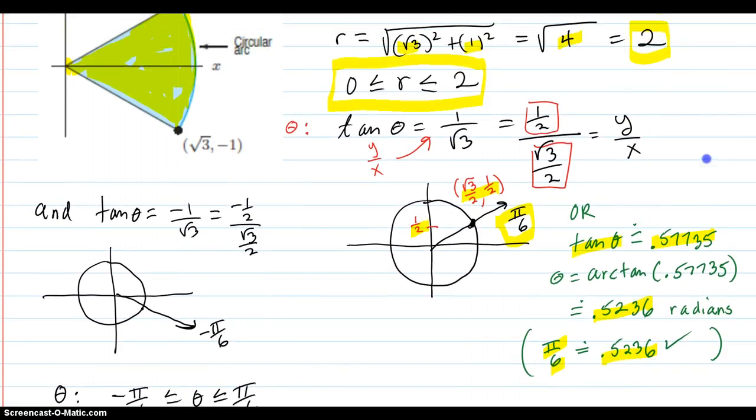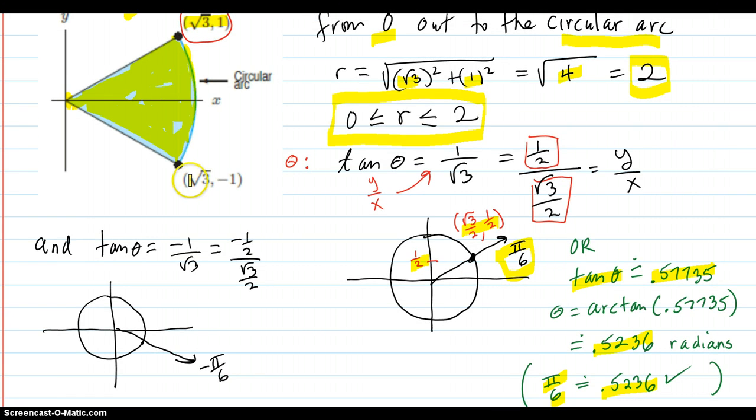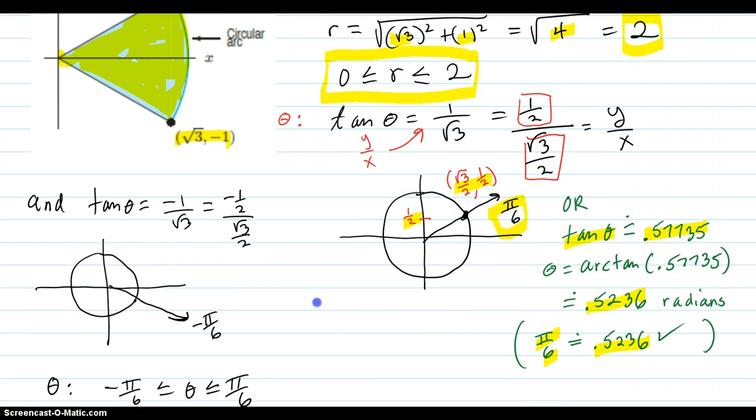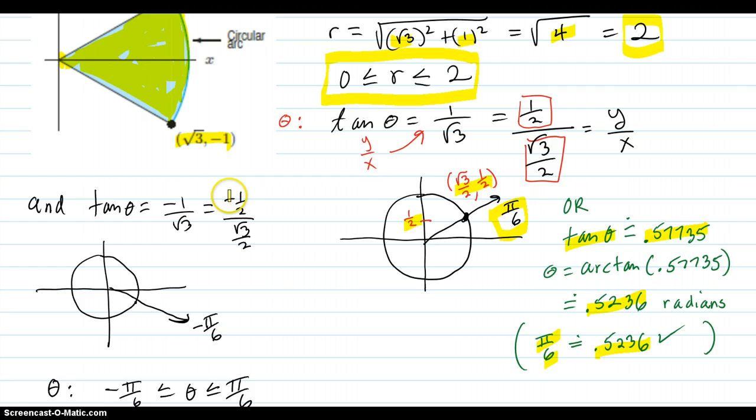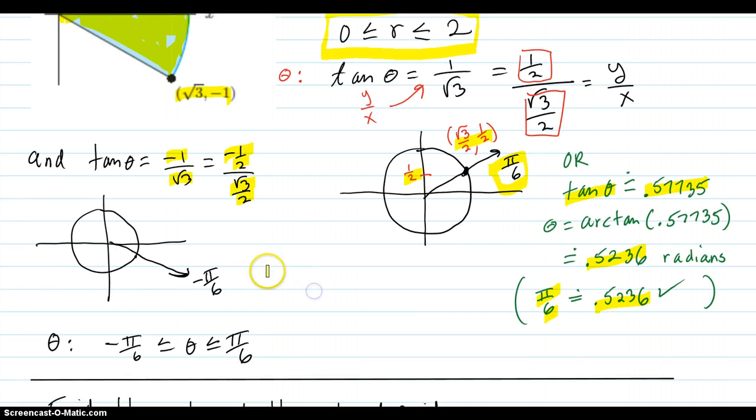And for the other angle, for this point down here, same thing we do. Negative one over the square root of three is equivalent to negative pi over two. And that corresponds to a negative pi over six angle on the unit circle. So if you take your angles from negative pi over six all the way up to pi over six, you're going to cover the region. So those are the answers.